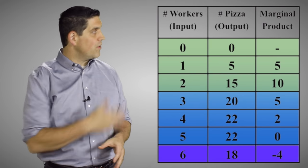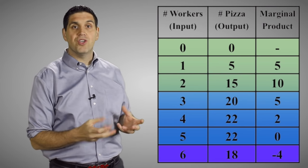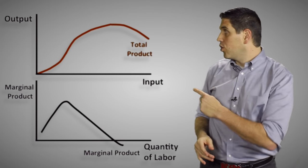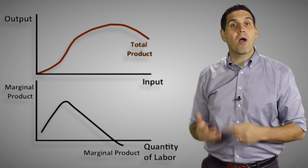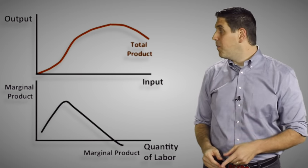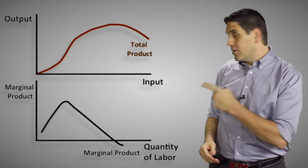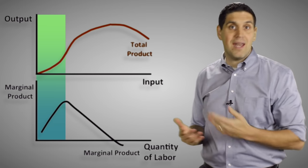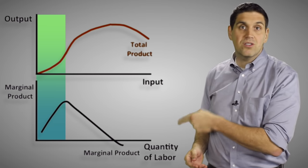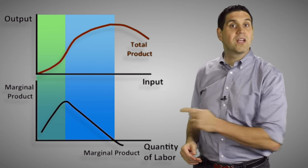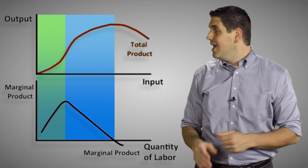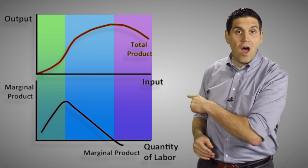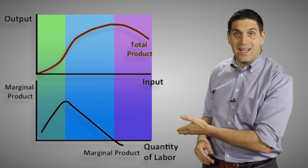Now hopefully you understand it with all the numbers. Let's take all this information and put it on a graph. Economists love graphs. Right here is the total product curve, and here is the marginal product curve. You should be able to spot the three stages of returns by looking at the graph. Stage one is where total product is increasing at an increasing rate, and the marginal product is going up. Stage two is where total product is going up but at a decreasing rate, and the marginal product is falling. Stage three is where total product is falling because the marginal product is negative.